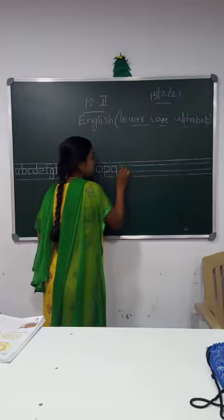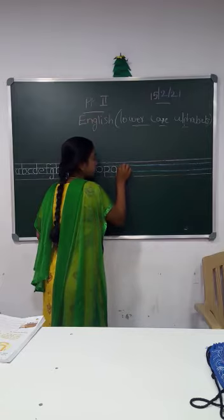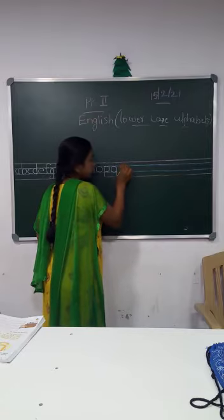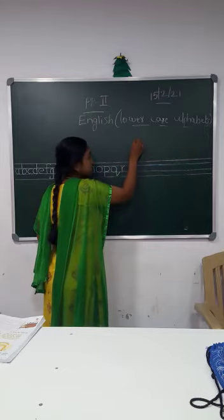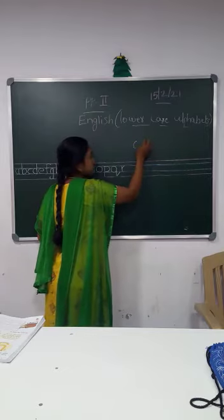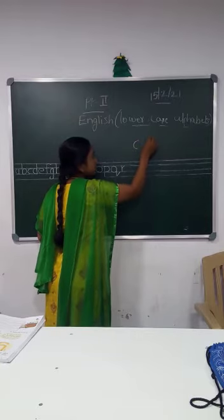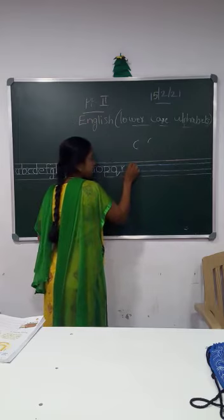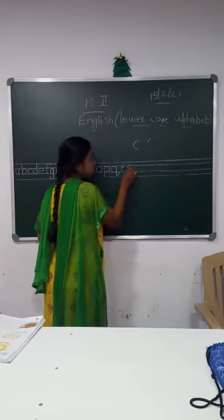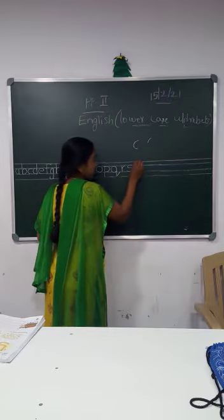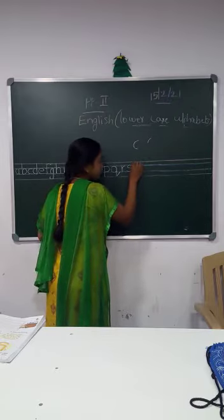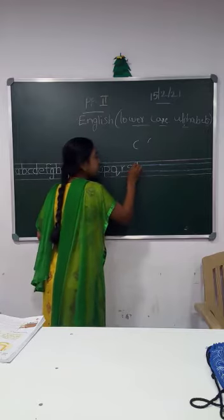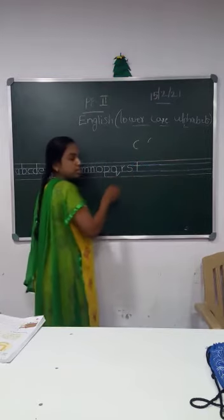Letter R: standing line, then half of the left curve. Letter S: left curve and then from here again right curve. Letter T: start from the red line, stop on the blue line — standing line, sleeping line on the blue line.